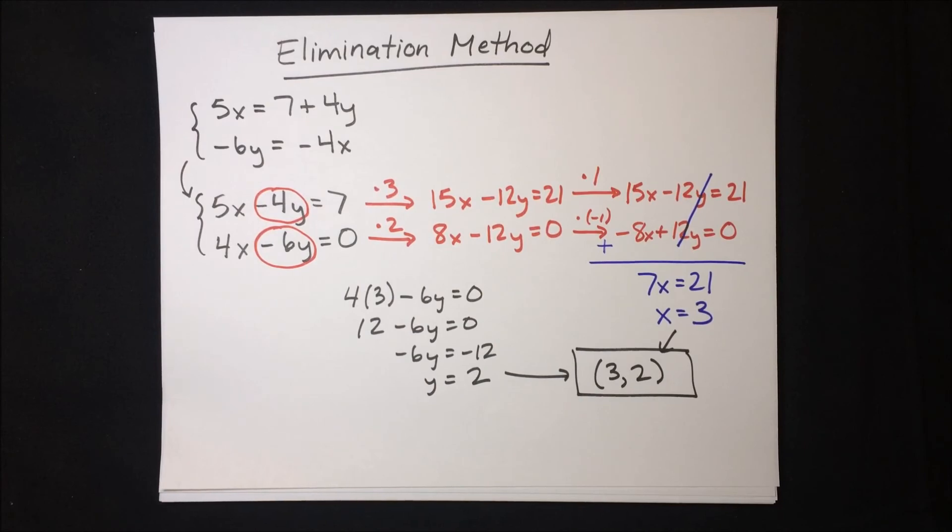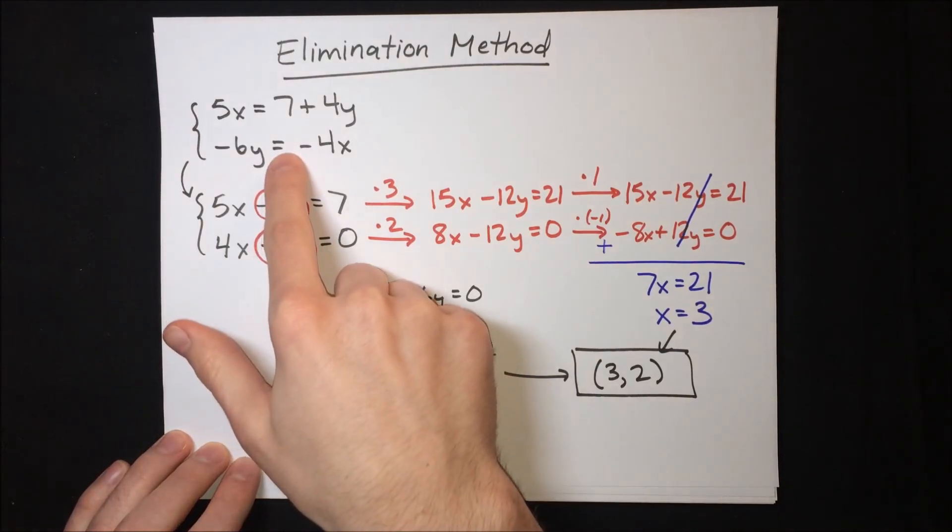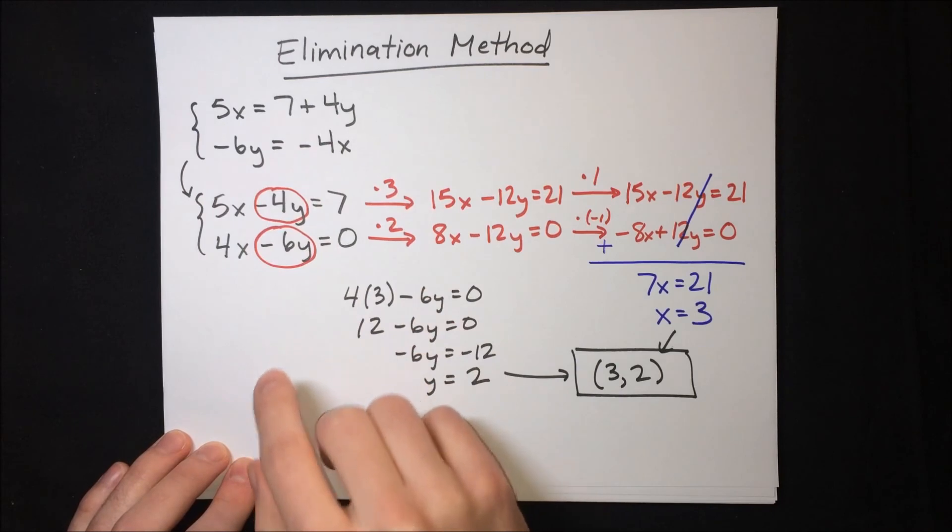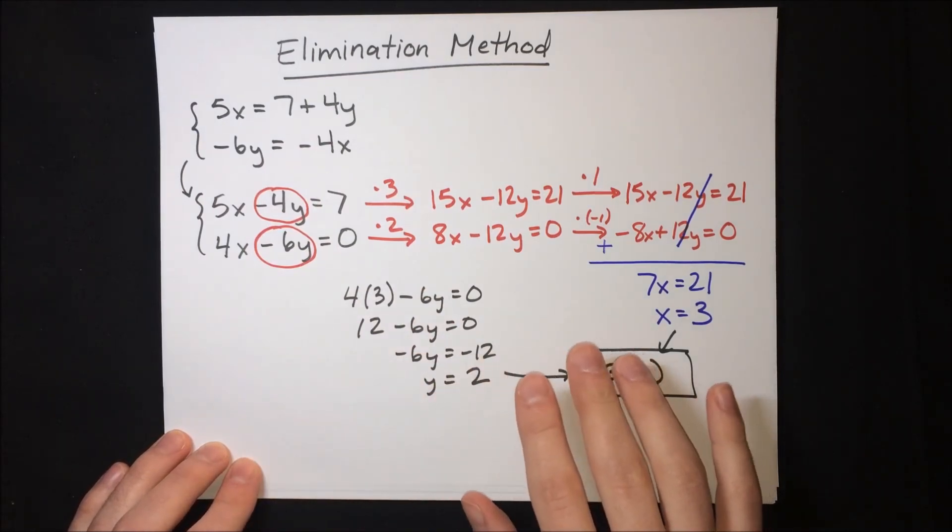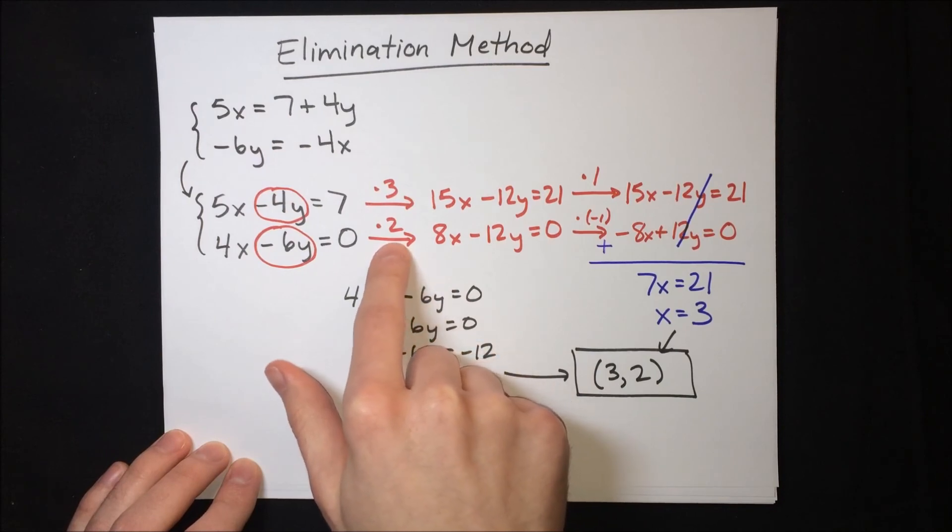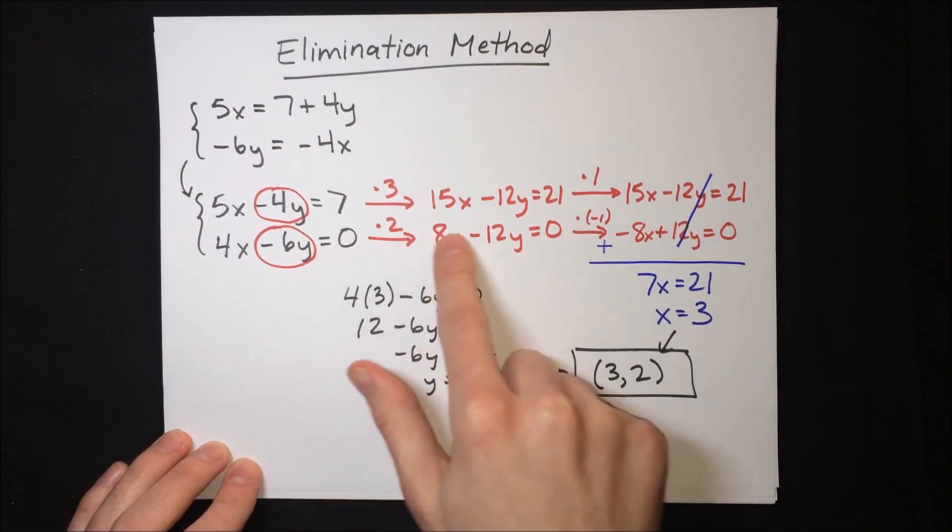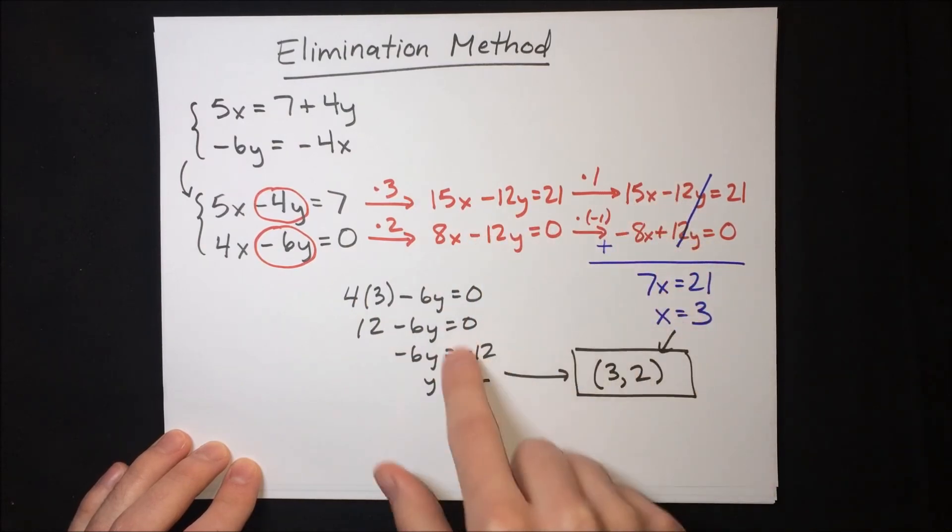The big advantage to elimination over substitution in particular is that in substitution, if we tried to do this system by substituting, we'd end up with a lot of fractions and that would lead to somewhat messy computations. But with elimination, we're just multiplying by whole numbers. We don't have to worry about fractions at all. And that keeps our computations really nice and easy to solve.